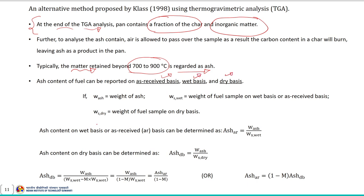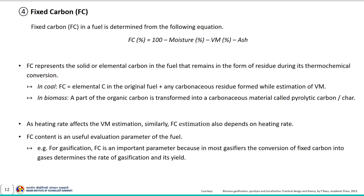Ash content on wet basis or as-received basis can be determined using a specific expression, and on dry basis using another equation. Once ash content on dry basis is known, ash content on as-received basis can be calculated using a correlation. Next in proximate analysis is fixed carbon content.